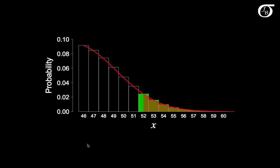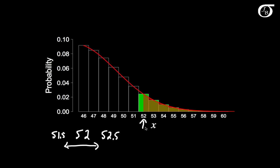To regain the original meaning of 52 from the discrete setting, we let 52 take on all values between 51.5 and 52.5. When we started at exactly 52.0000… we were missing out an important half of 52. So what we really should do is start at 51.5. That's where we should start.